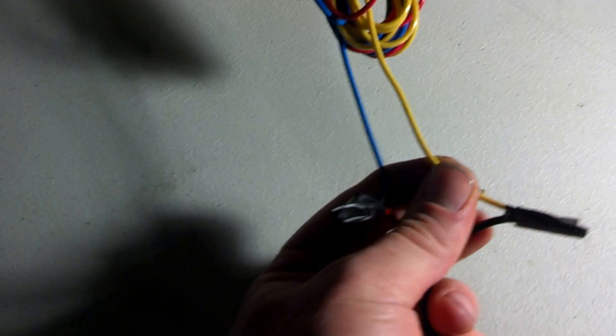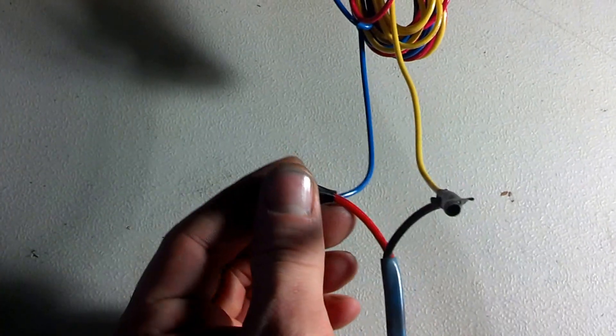The yellow is the zero and this is the positive. It goes into my Flyback Transformer.